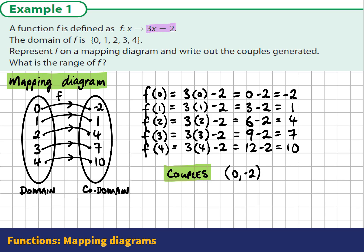So input 0, you get negative 2, and that's how we represent it. We have input 1, we get 1. Input 2, we get 4.